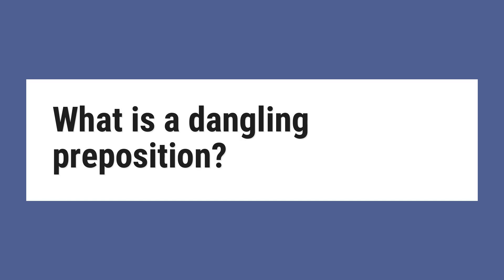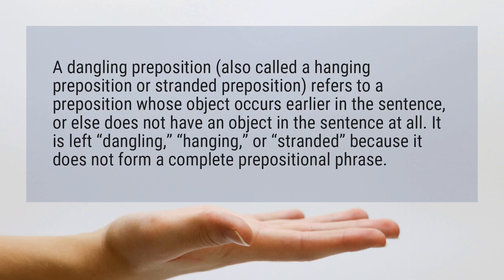What is a dangling preposition? A dangling preposition, also called a hanging preposition or stranded preposition, refers to a preposition whose object occurs earlier in the sentence, or else does not have an object in the sentence at all. It is left dangling, hanging, or stranded because it does not form a complete prepositional phrase.